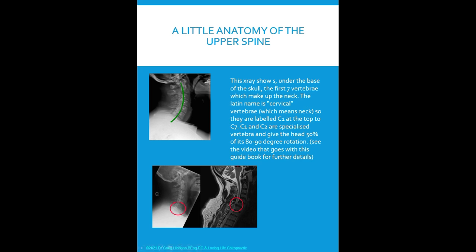A little anatomy of the upper spine — to get the most out of this, you need to understand a little bit about your body. This diagram here is an X-ray. White means it's dense material — here's the shoulder, we're looking through the shoulder, the X-ray shot into the ear. This is the jaw, and these are the teeth — these teeth have a brace on. The more dense, the more white it looks; the darker it is, the more air density, the less dense.